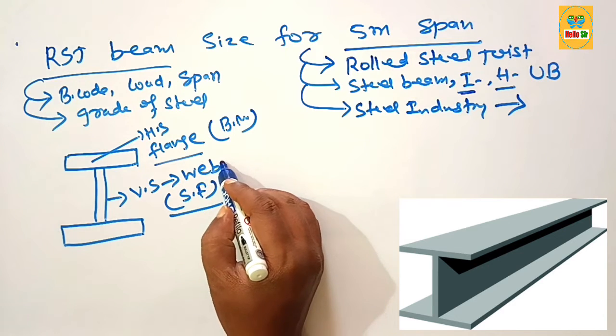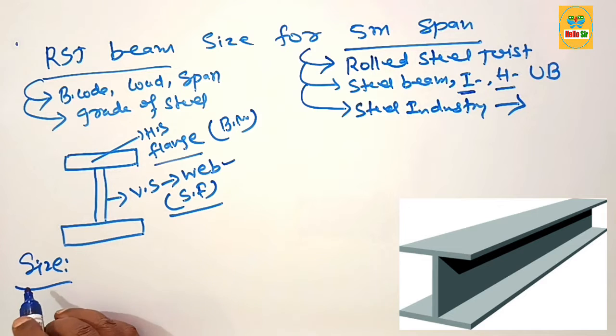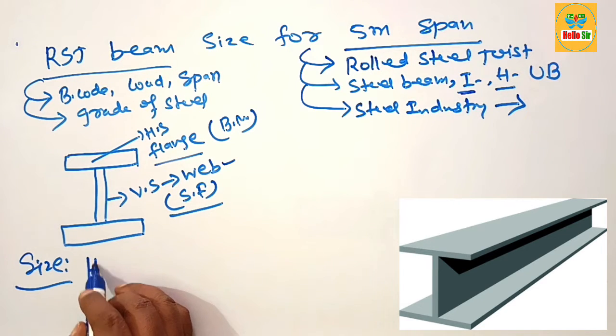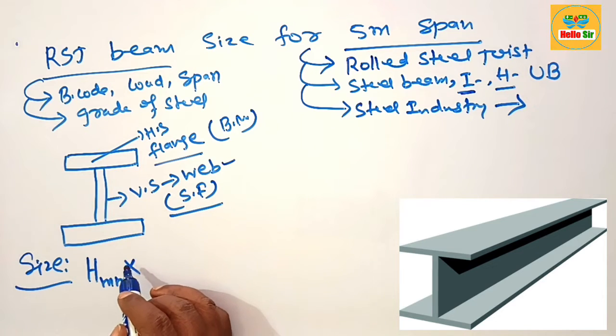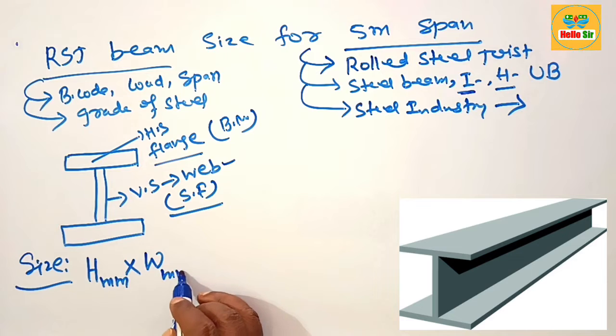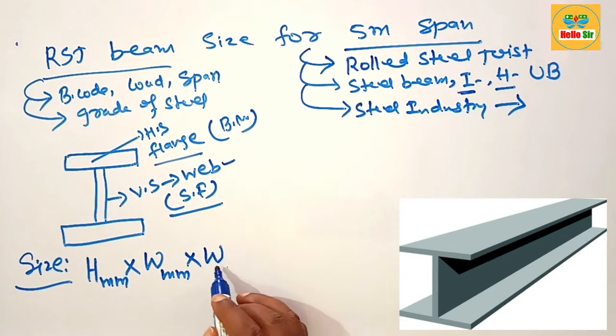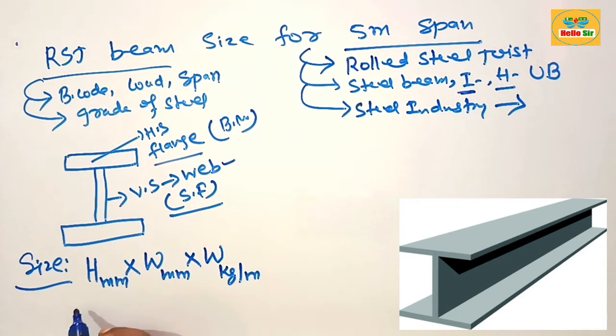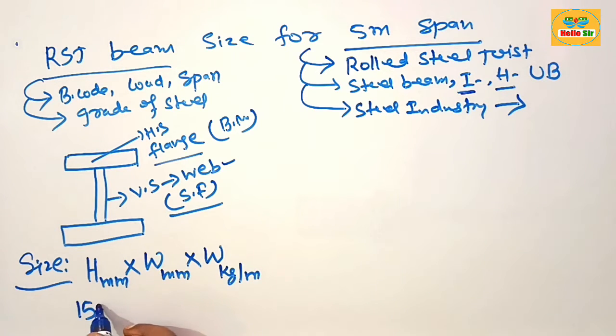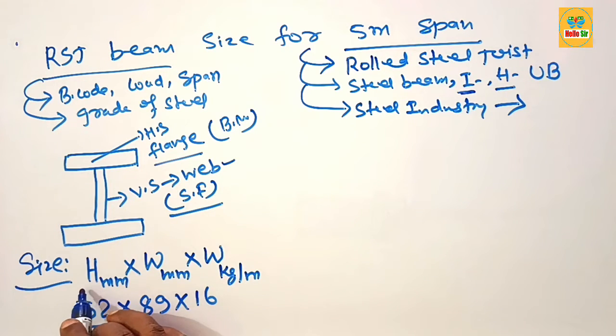The size of RSJ beam express like that: the vertical height is expressed in mm, multiply this one the width section of the beam known as flange express in mm, and what is the weight of this RSJ beam. This one is the weight expressed in kilogram per meter. Like that the size of given example: the size of RSJ beam 152 x 89 x 16.